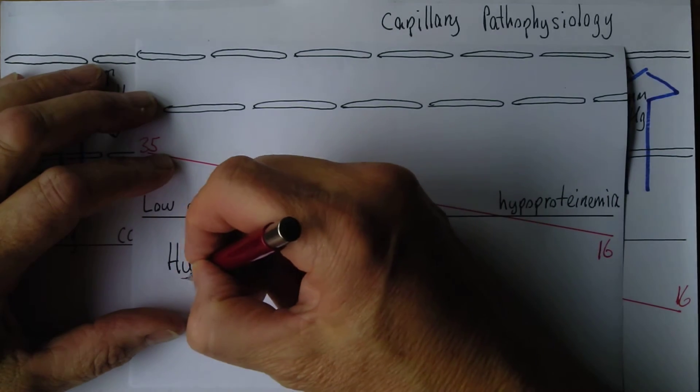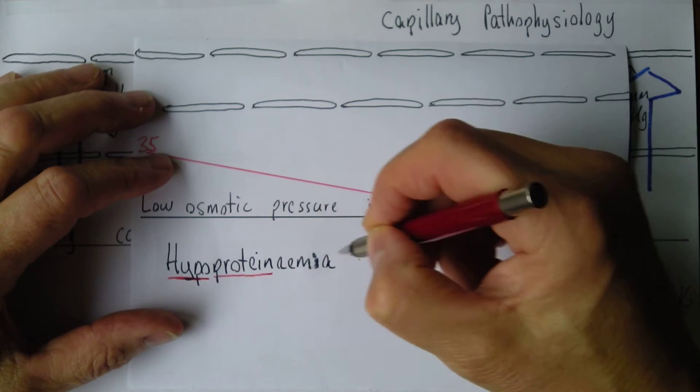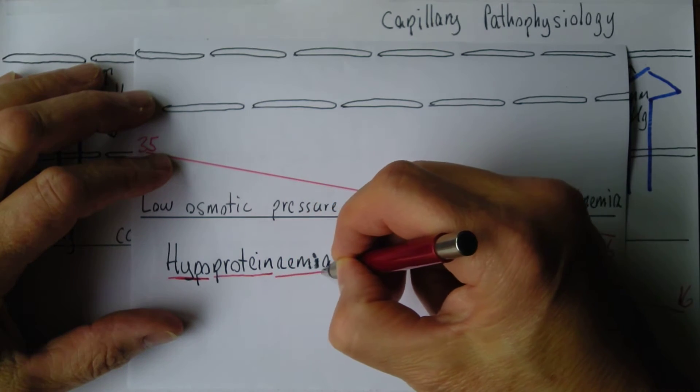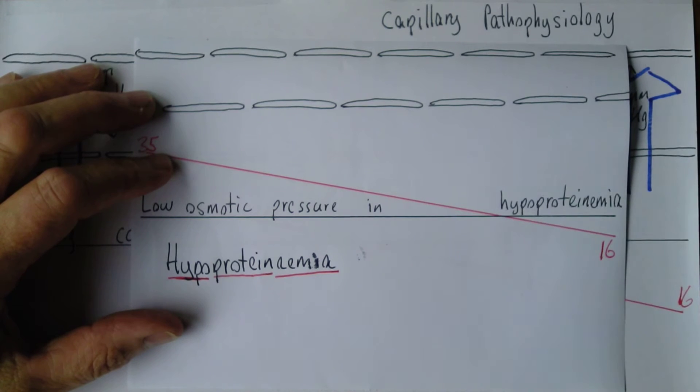Hypoproteinemia - hypo means low, protein is the protein, and emia. If you're English you put an A, if you're American US spelling doesn't have an A.